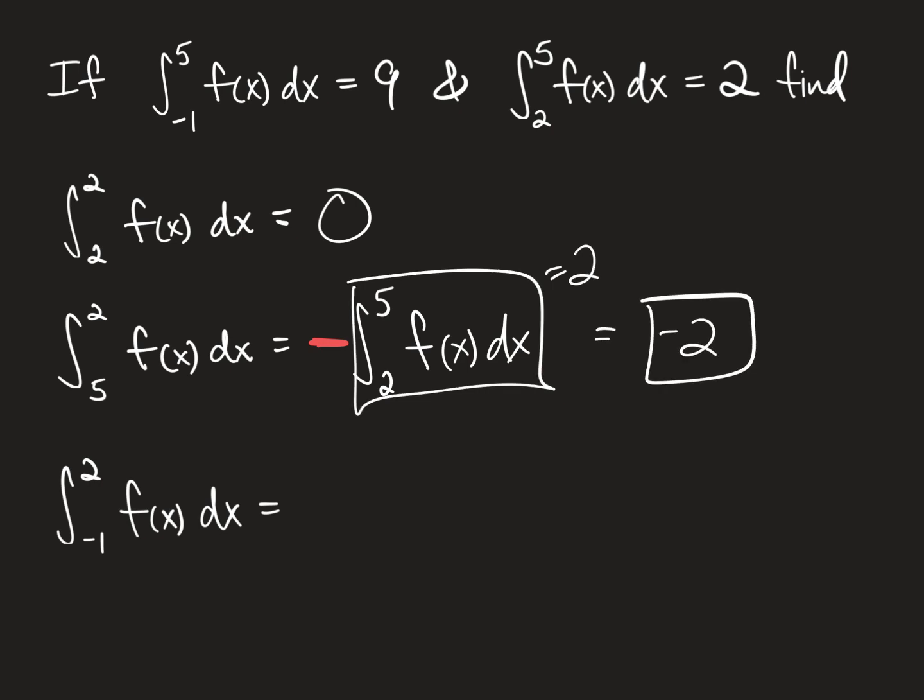Last one. The integral from negative one to two of f of x dx. Now, this is a weird one because we don't have any integrals up here with negative one and two that are limits of integration. But we do have two other integrals that can help us get there. These limits of integration go from negative one to two, and these limits of integration go from two to five. So if you look at these limits and connect them, it goes all the way from negative one to five, which is what this integral has for its limits of integration.